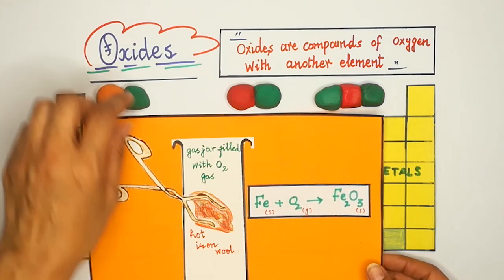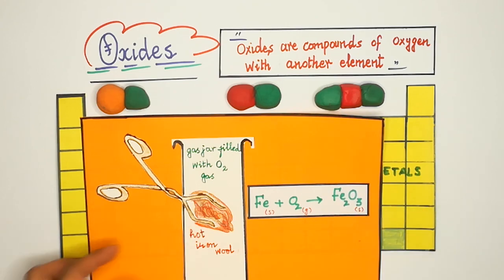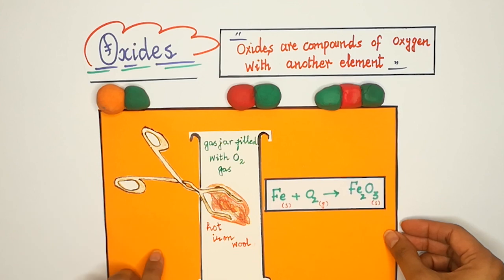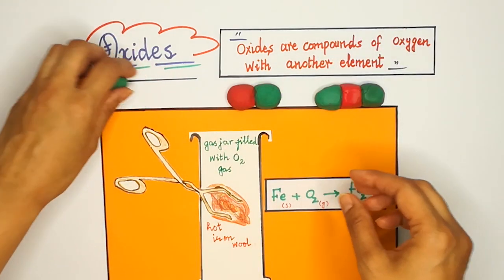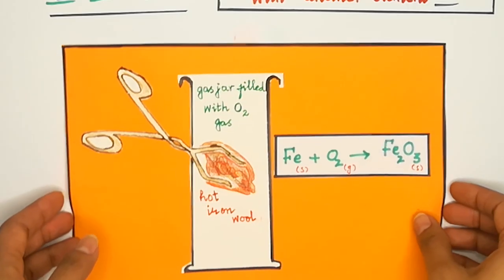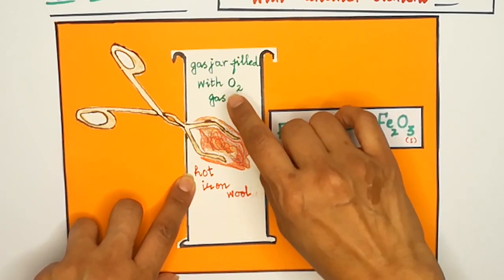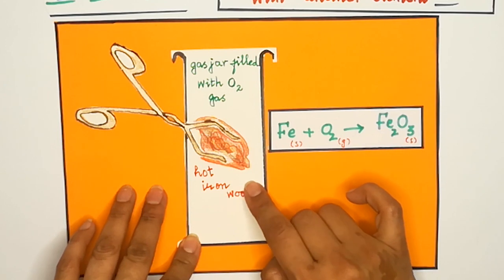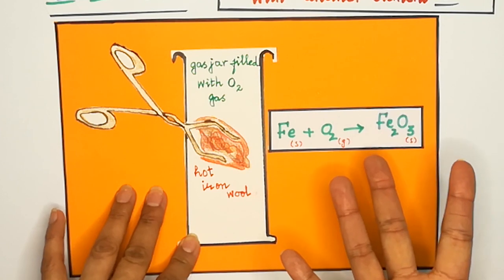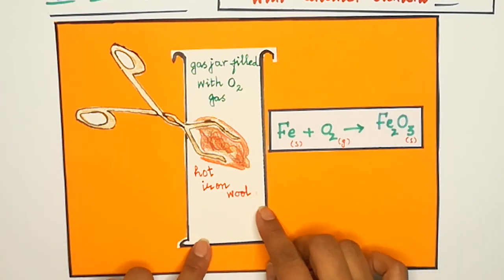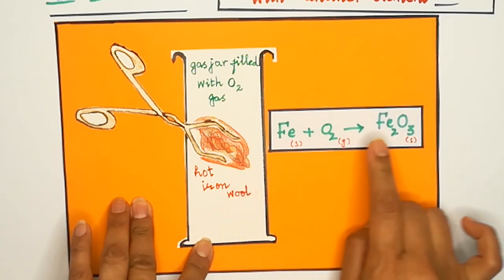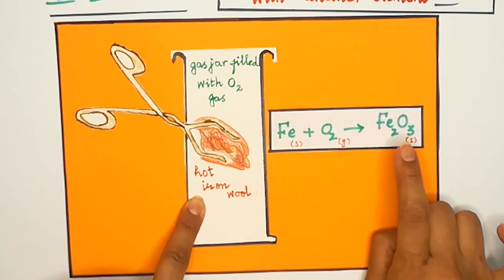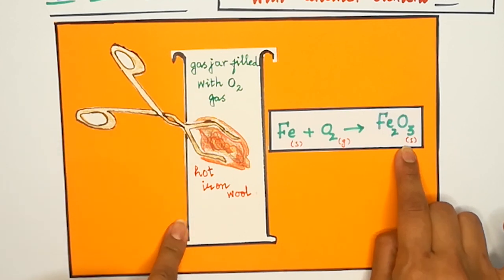For example, iron oxide Fe₂O₃ can form as follows: when hot iron wool is plunged into a gas jar of oxygen, it glows bright orange and throws out a shower of sparks. A black solid is left behind — that black solid is iron(III) oxide. So when hot iron reacts with oxygen, it forms black iron(III) oxide.